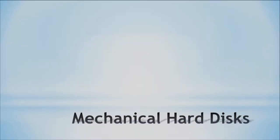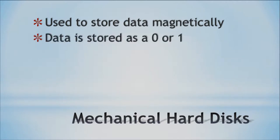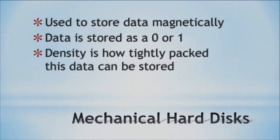Hard drive technology really hasn't changed much — though within the last several years the technology has been rapidly changing. Prior to that, we always had these mechanical hard drives with moving parts. Mechanical hard drives store data magnetically, and data is stored as either a zero or a one. Density refers to how tightly packed this data can be stored — the more dense, the more tightly packed the data.